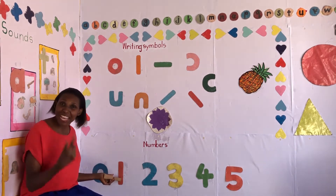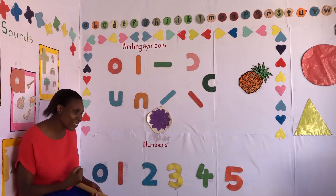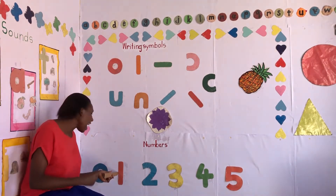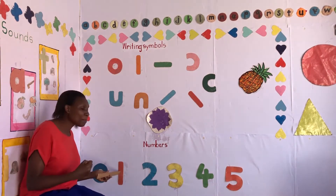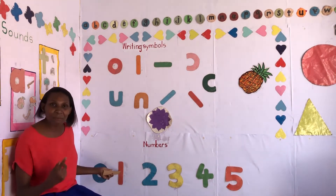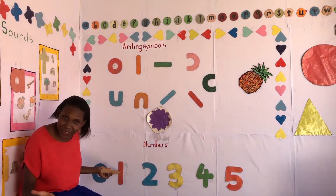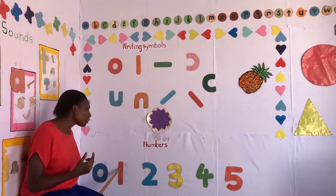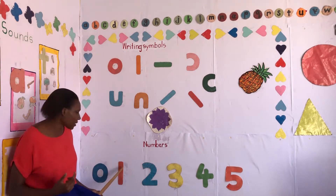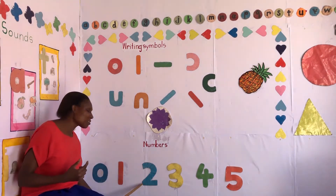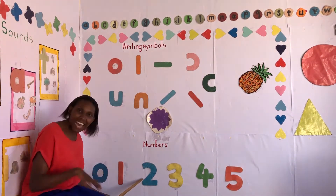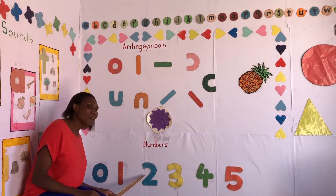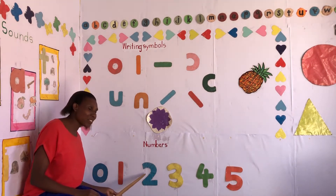Let us sing again for number one: Number one, number one, where are you? Here I am, here I am, how do you do? Number one, number one, where are you? Here I am, here I am, how do you do? Number two, number two, where are you? Here I am, here I am, how do you do?